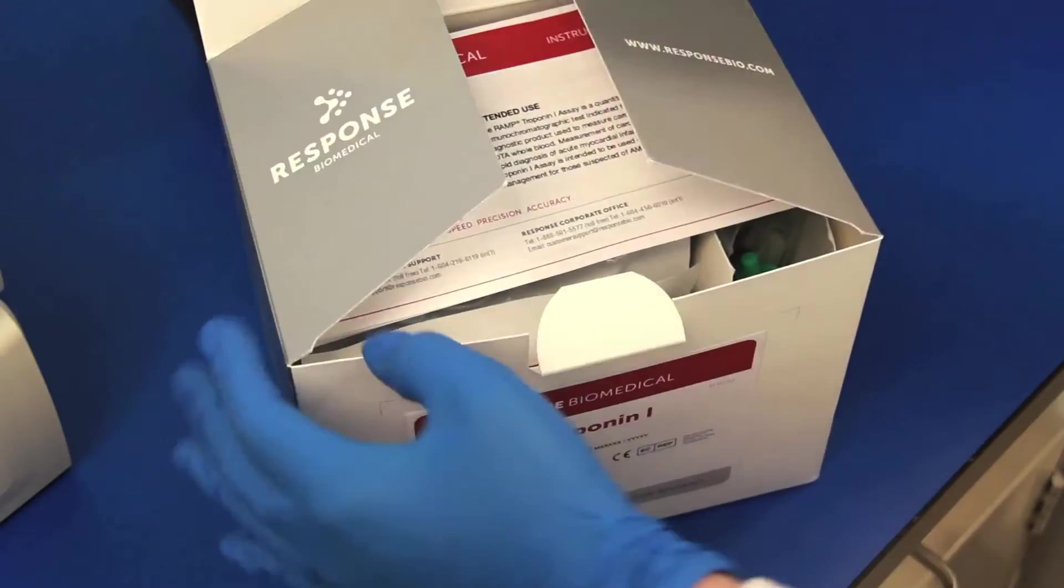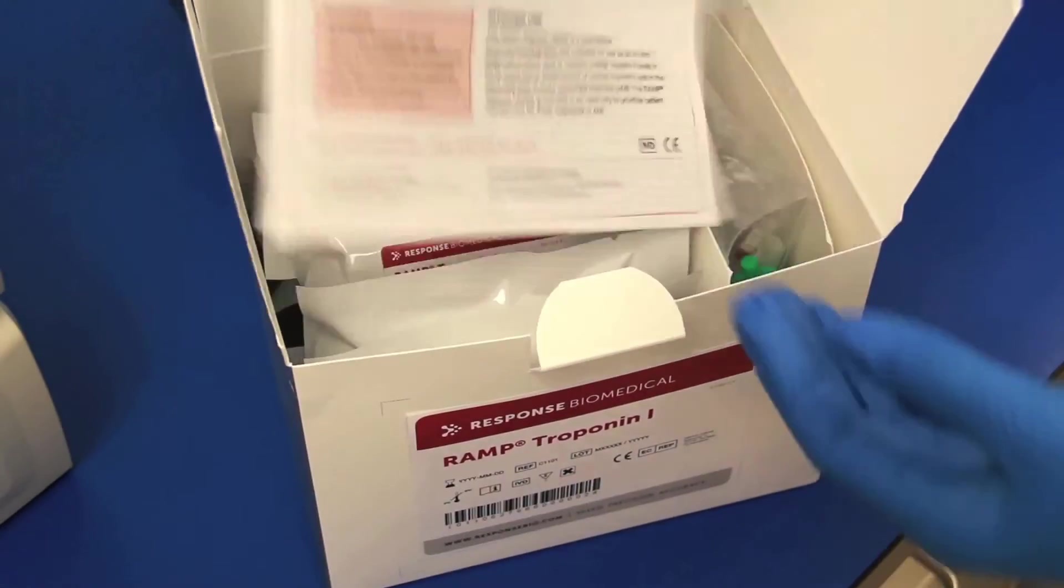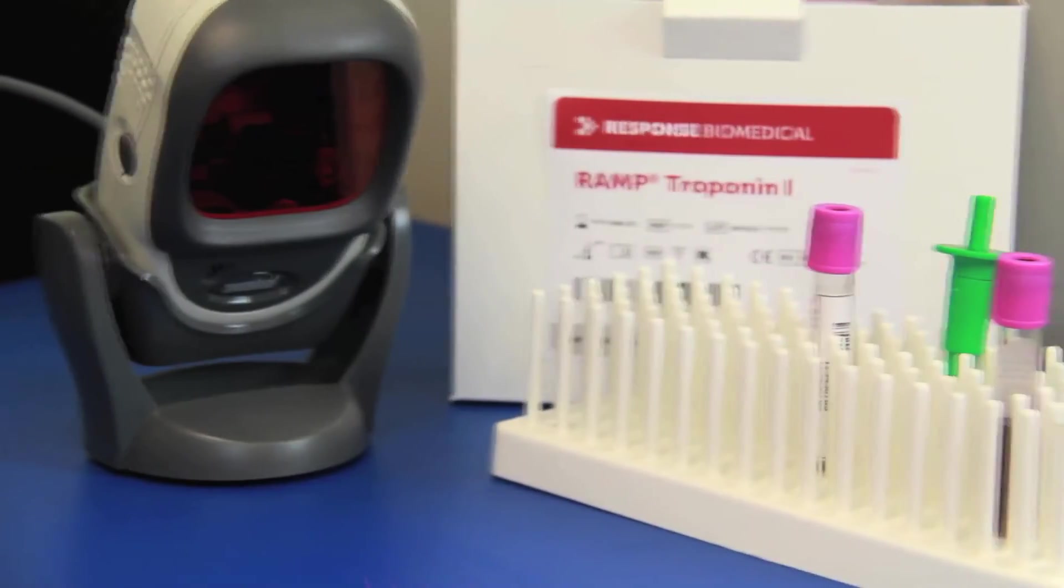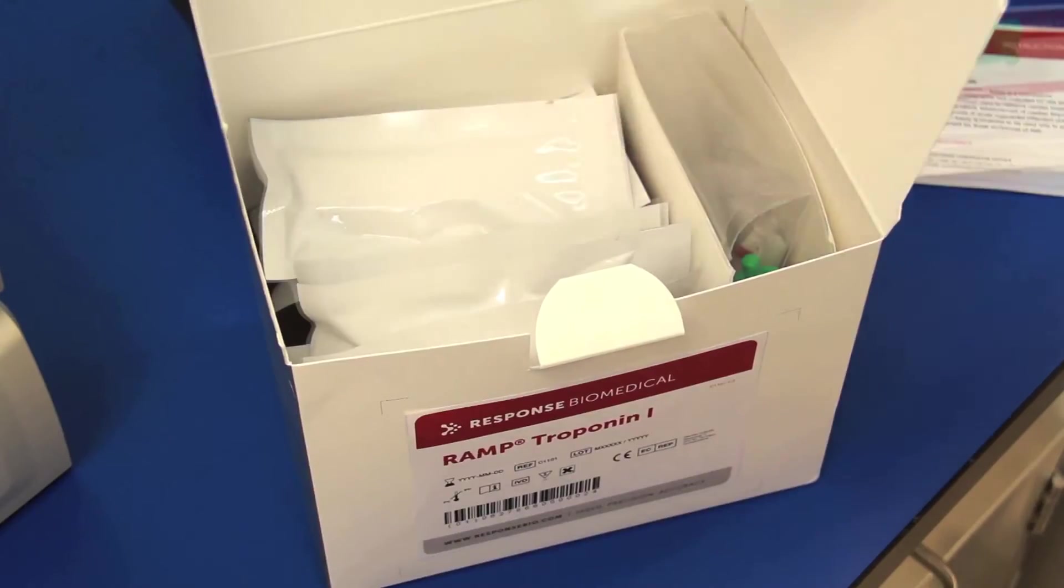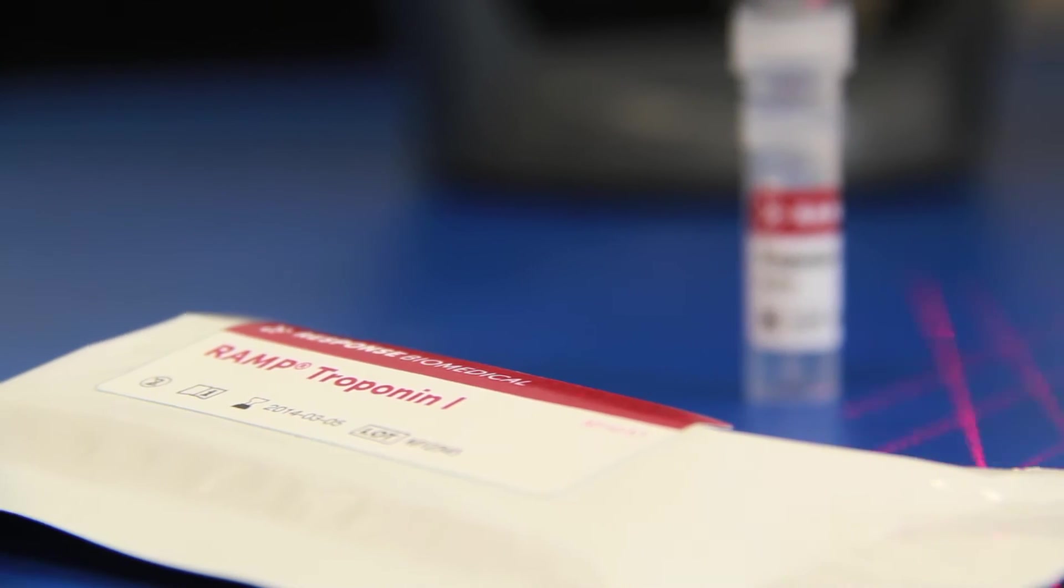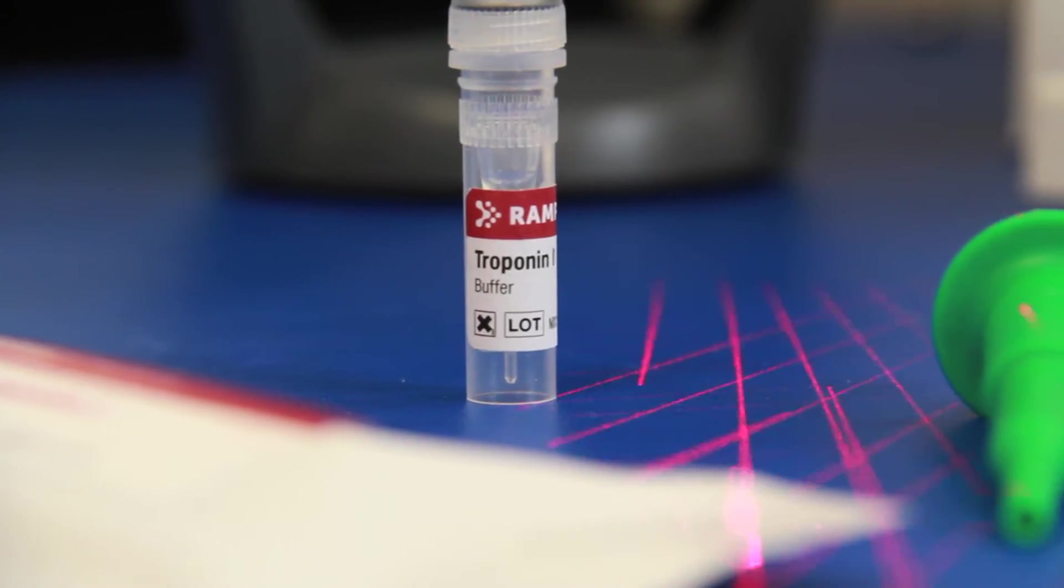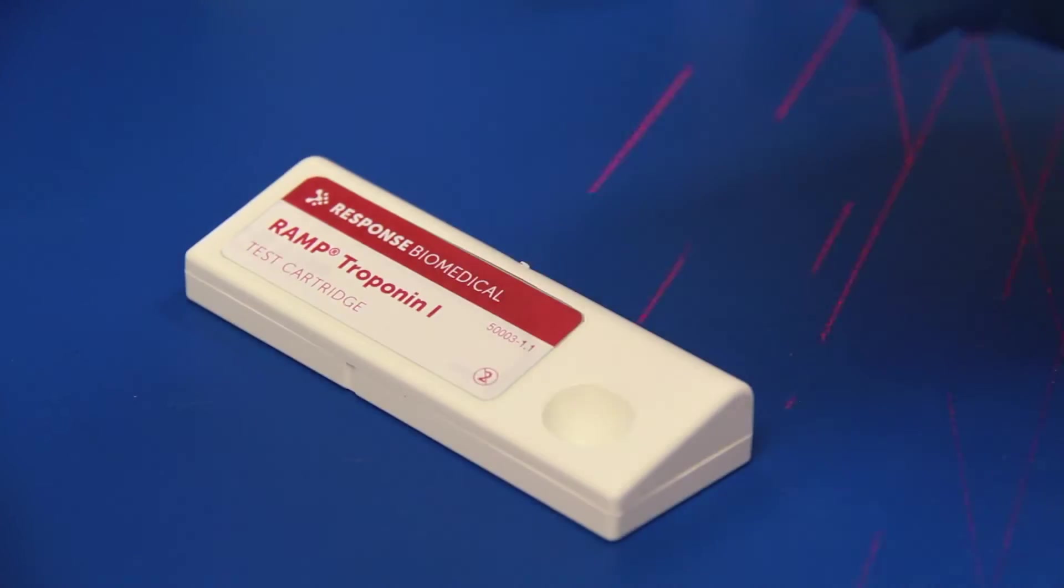Each test kit contains the required components to perform 25 tests. To run a test, an EDTA whole blood sample is required, in addition to one test pouch and one buffer vial. Within the pouch you will find one cartridge and one test tip that contains the fluorescently bound antibodies.